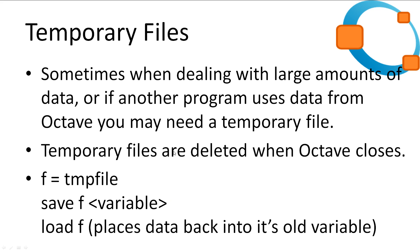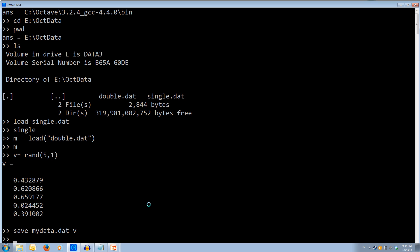Ok, so let's jump over to Octave and we'll create a temporary file. So let's call our temporary file f. So that's going to be a file handle. So f equals tmp file. So we can see that f equals 3. So f is a file handle with the value 3.